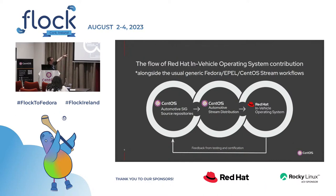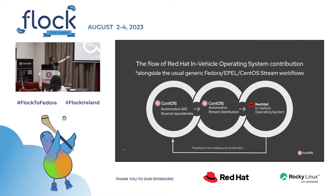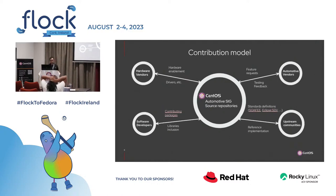This would be what's called the CentOS Automotive SIG repos. If you can contribute your change there, it'll make its way to CentOS Automotive Stream Distribution, which will eventually make its way to Red Hat in-Vehicle Operating System. And then we have this kind of continuous certification and testing framework, so if anything pops up, the change is made into the repo and it propagates through the pipeline again. We receive all kinds of contributions from hardware vendors doing hardware enablement, from automotive vendors like General Motors, for feature requests and whatnot.